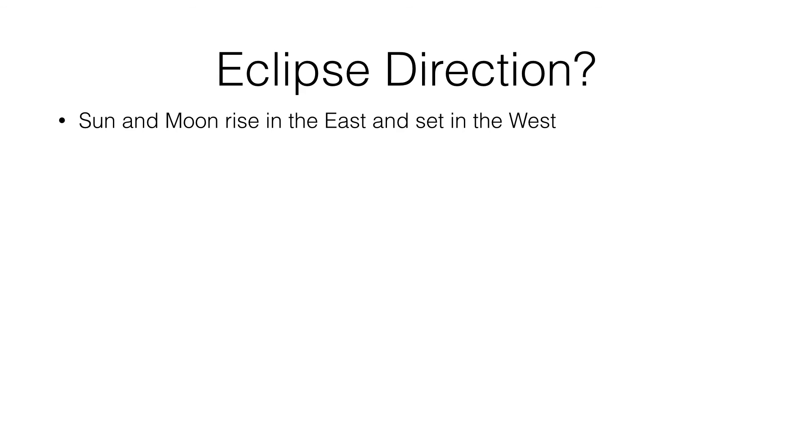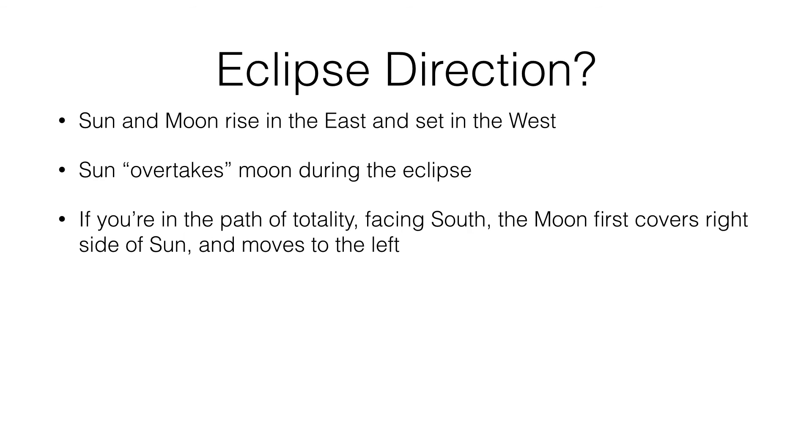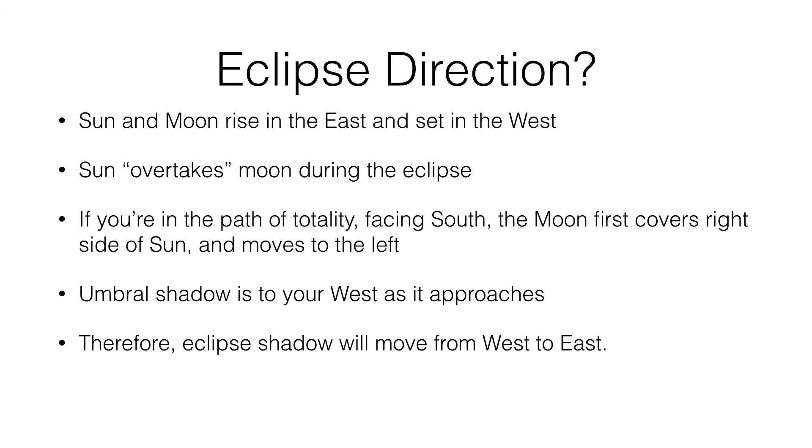So what does this mean? Well, we all know that the sun and the moon rise in the east and set in the west. We also know that during the eclipse, the sun basically overtakes the moon. So they're both moving east to west in the sky, but the sun is overtaking the moon during the eclipse. So if you're in the path of totality and you're facing south, the moon is first going to cover the right side of the sun, and then the moon is going to move to the left, or the sun moves to the right. But basically, it's being obscured from the right. So the umbral shadow is to our right, and if we're facing south, that means it is to our west. The umbral shadow is to our west as it approaches. So therefore, the eclipse shadow will move from west to east.